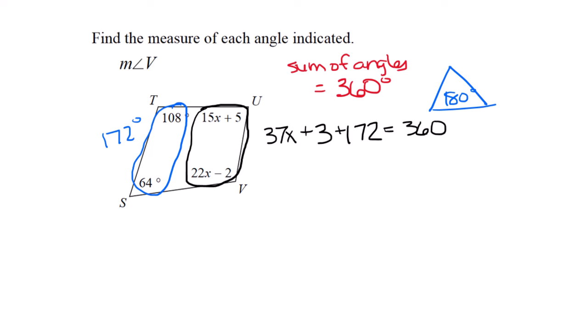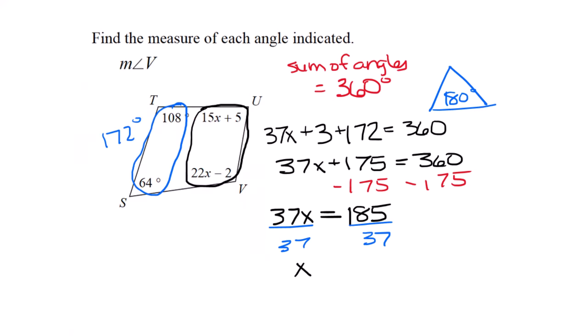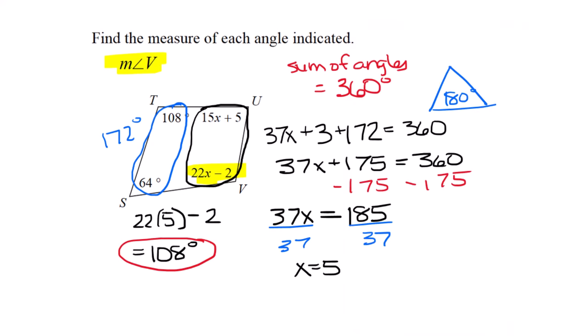Combining terms, 37x plus 175 equals 360. Subtract 175, 37x equals 185. Divide by 37, x equals 5. But they asked for angle V, not x. V is 22x minus 2. Substitute 5, and we get 108 degrees.